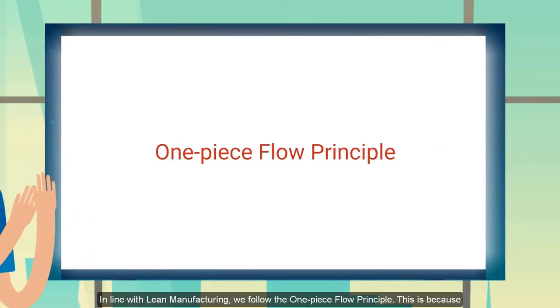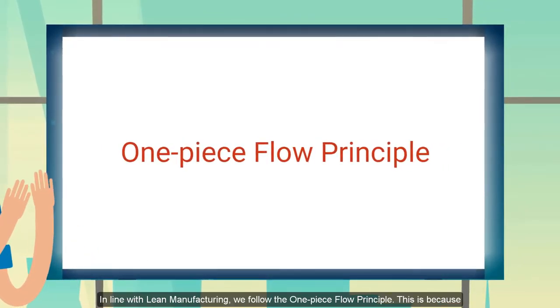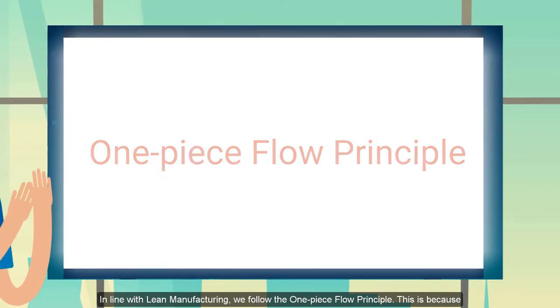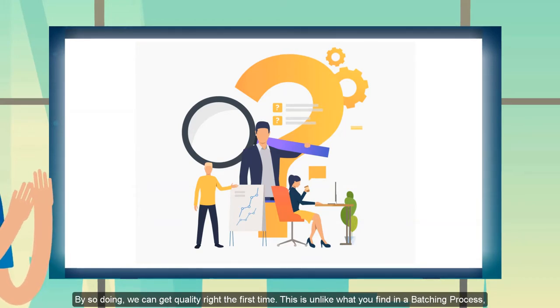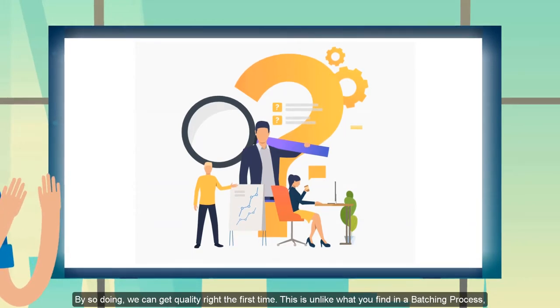To honor lean manufacturing principles, we follow what is called the one-piece flow principle. This helps bring problems to the surface as they occur as well as stop to fix problems. This enables us to get quality right the first time.